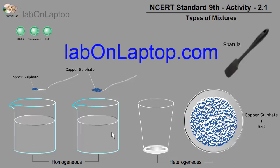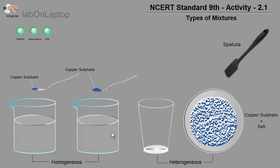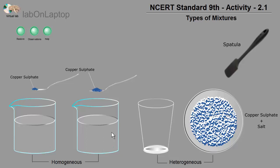Hello friends, welcome to the Lab on Laptop virtual lab channel. Today, we have brought a 9th standard NCERT virtual experiment. The first activity of the 2nd chapter is 2.1. The 2nd chapter is called 'Is Matter Around Us Pure?'